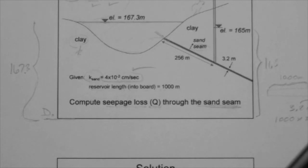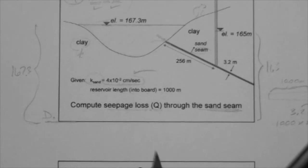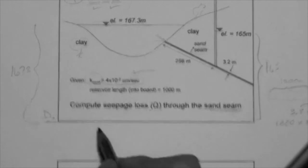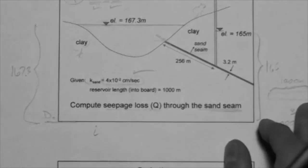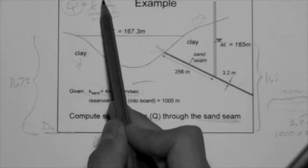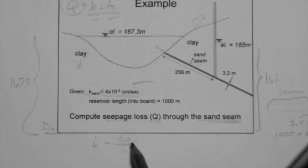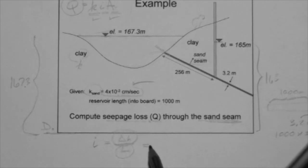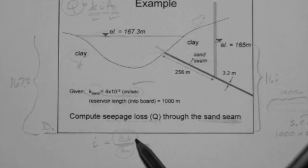What is the I? What's I? The gradient. The gradient, which is the last one we need, delta H over L. The changing head from one point to another divided by the length over which the head is lost. Remember that definition. Memorize it. The gradient is the changing head between two points divided by the distance over which the head is lost.